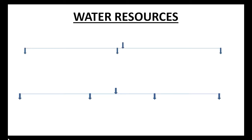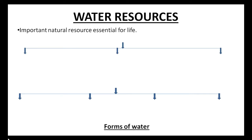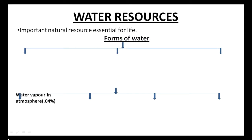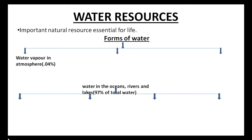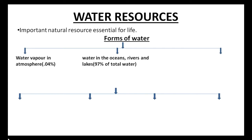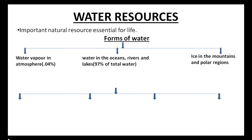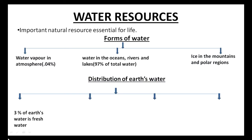In this video we will study about water resources. Water resource is the most important natural resource essential for life. There are three forms of water: about 0.04 percent of water is in the form of water vapor in the atmosphere, 97 percent of total water is in oceans, rivers and lakes, and the rest is in the form of ice in the mountains and polar regions.